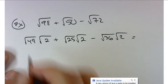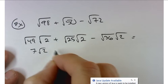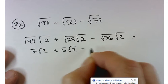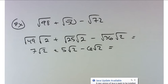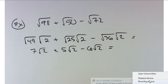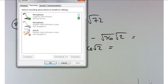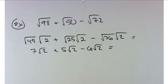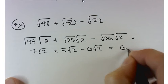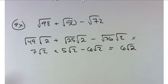This becomes 7 square roots of 2 plus 5 square roots of 2 minus 6 square roots of 2 and again add up the coefficients. Okay so 7 and 5 is 12 minus 6 is 6. So 6 square roots of 2. Nice. You can actually check yourself on your calculator.